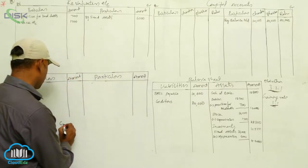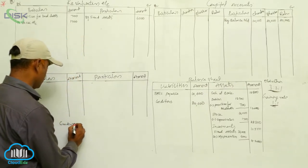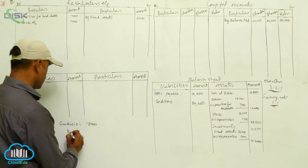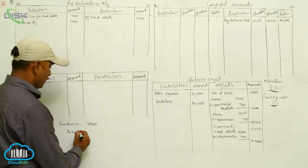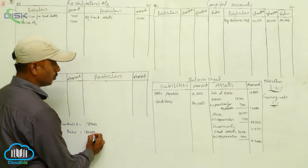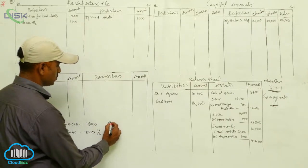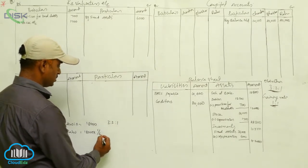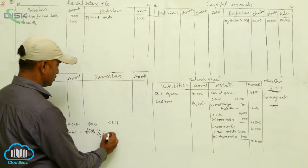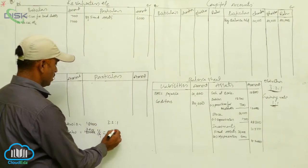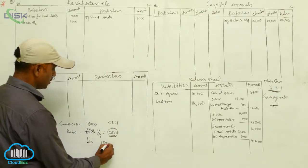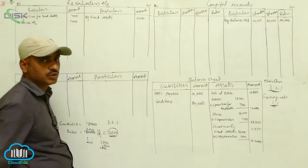The next step is goodwill. Given total value is 18,000. In this business, Rahu is retired. Rahu's share is one-sixth, so 18,000 into one-sixth equals 3,000. The continuing partners will take this in their 1:1 ratio, meaning 1,500 and 1,500, so both contribute 3,000.